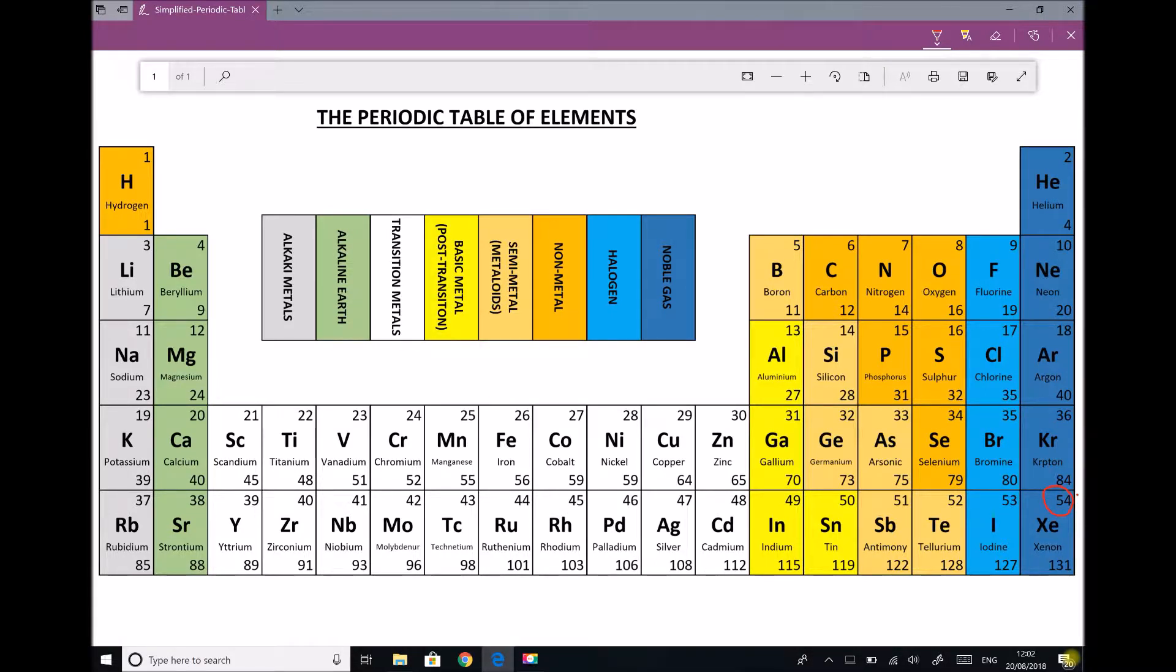On a complete periodic table, there's actually 118 elements. So we have cut off quite a few of those in order to simplify this, but in order to help us to understand what's happening with the periodic table.